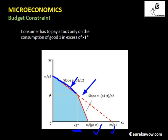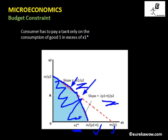When the price of good one increases, the slope of the budget line increases. Initially the slope was minus p1 by p2; now it becomes minus (p1 plus t) by p2. Since the numerator has increased, the slope is steeper after x1 star units. As a result, the budget set of the consumer reduces when the tax is applied.